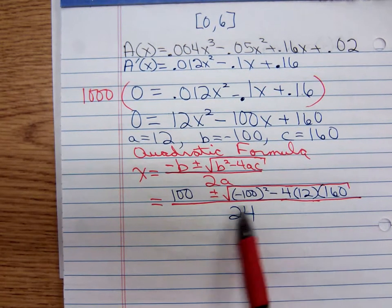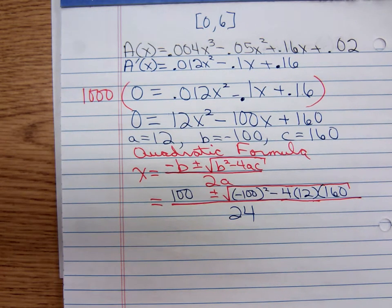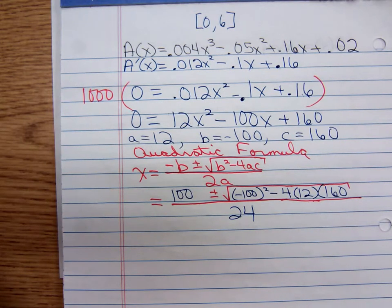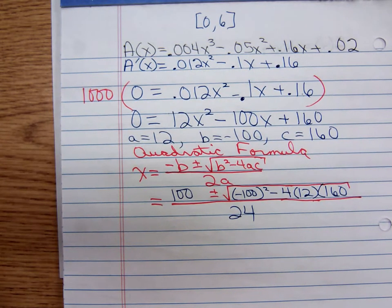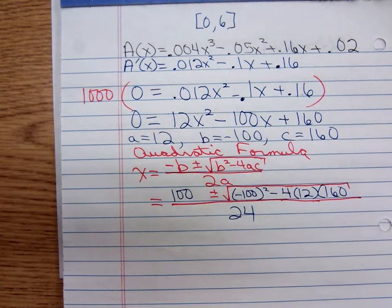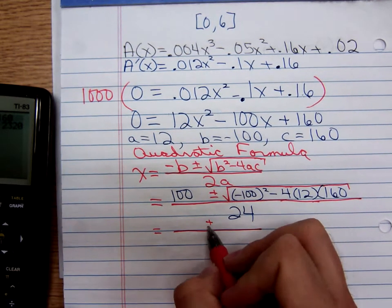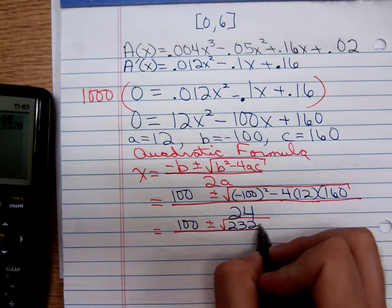I'm going to work underneath that radical. What are y'all getting under that radical? 2320. So we have 100 plus or minus the square root of 2320 all over 24.